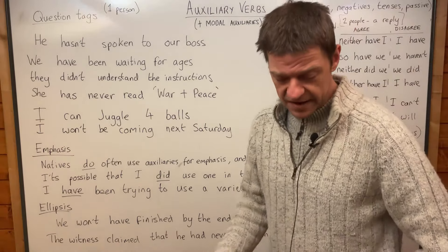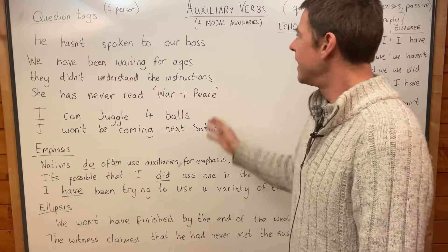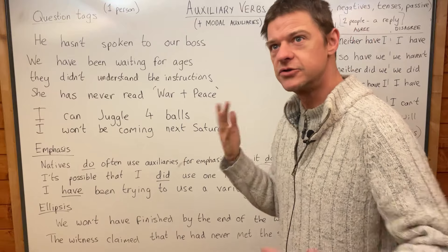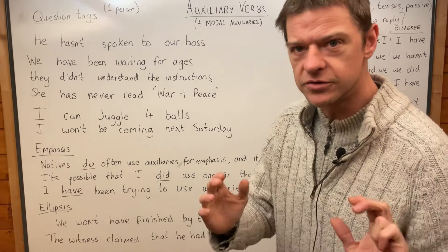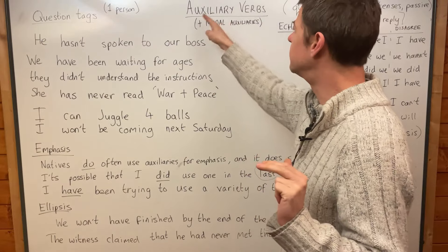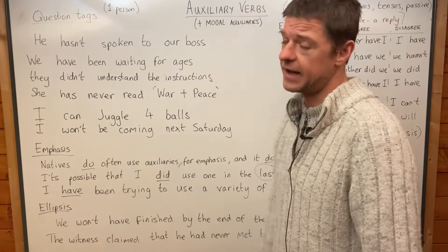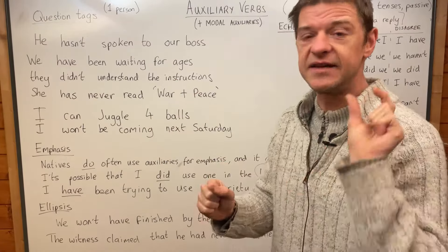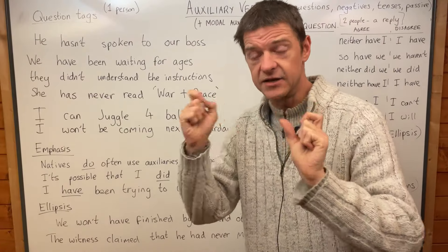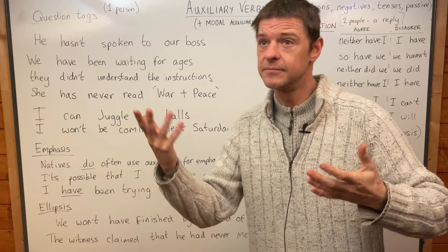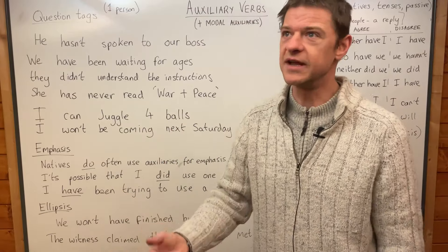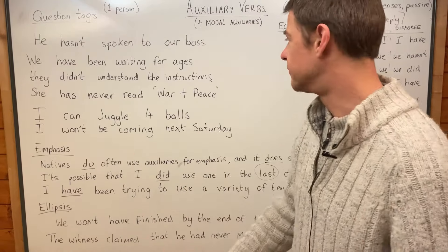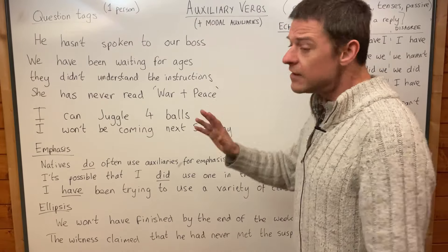Welcome to a new lesson on auxiliary verbs, including modal auxiliary verbs: can, must, might, could, would, should, will. All of those are called modal verbs, but they are a subset of auxiliary verbs. I would define a modal verb as a verb where you don't add an 's' with the he/she form. I play, he plays — ordinary verb. But I can, he can; I will, he will; I would, he would — all modal verbs.